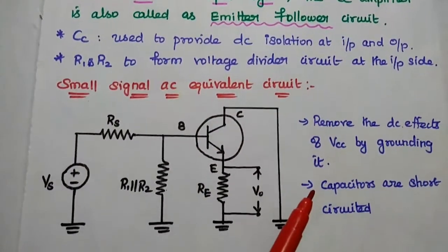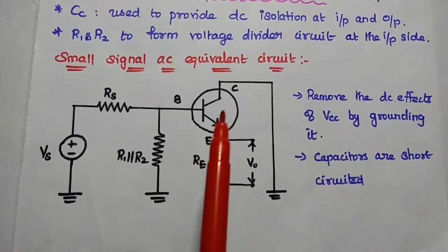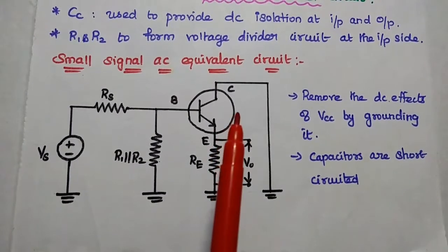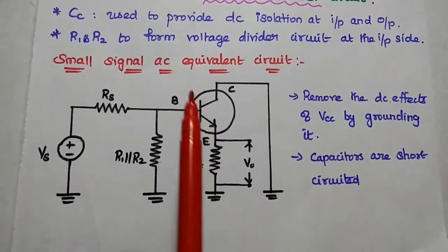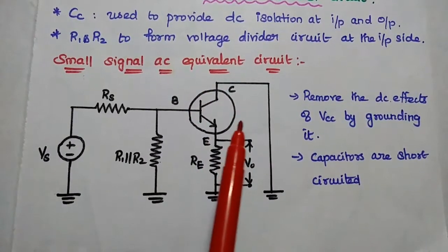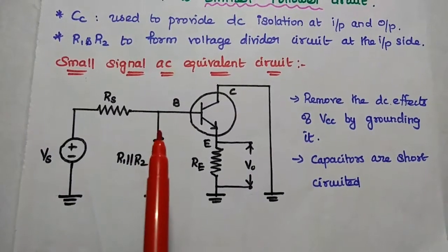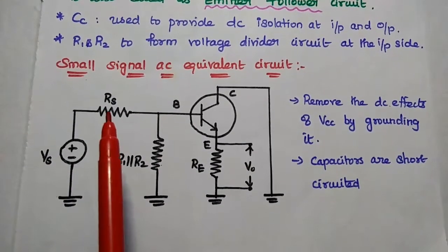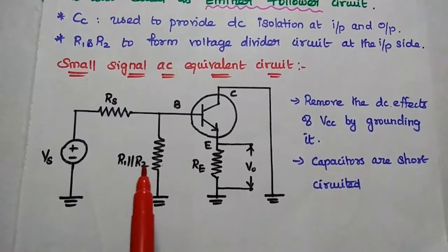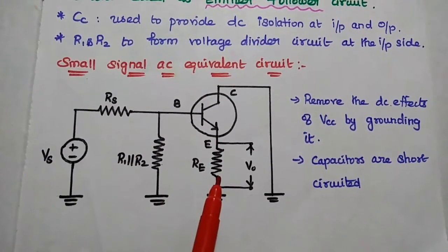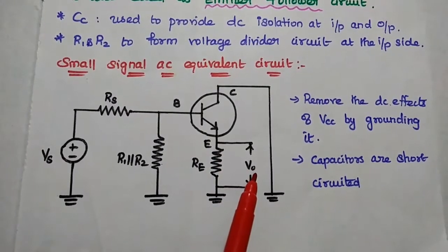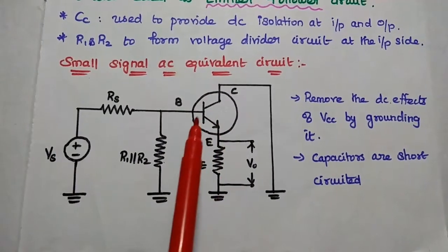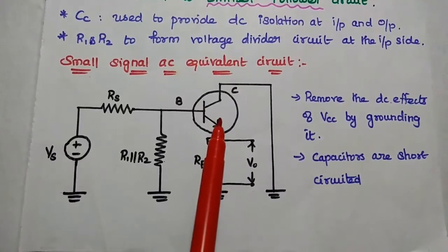We are going to draw the small signal AC equivalent circuit. For that, we have to follow certain steps. First, we have to remove the DC effects of the supply voltage VCC by grounding it, so there is no supply voltage VCC in this equivalent circuit. R1 and R2 are combined together as a parallel component. Then VS in series with RS, R1 parallel to R2, and emitter resistance across which we can get the output signal. Capacitors are short-circuited.